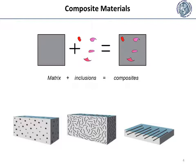The individual components remain separate and distinct within the finished structure, differentiating composites from mixtures and solid solutions. The new material may be preferred for many reasons. Common examples include materials which are stronger, lighter, or less expensive when compared to traditional materials.